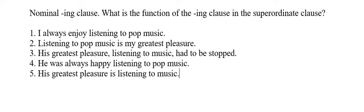Number one: 'I always enjoy listening to pop music.' Here, 'I' is the subject and 'enjoy' is the verb. 'Enjoy' is a normal monotransitive verb — it requires a direct object. So 'listening to pop music' plays the role of direct object here.